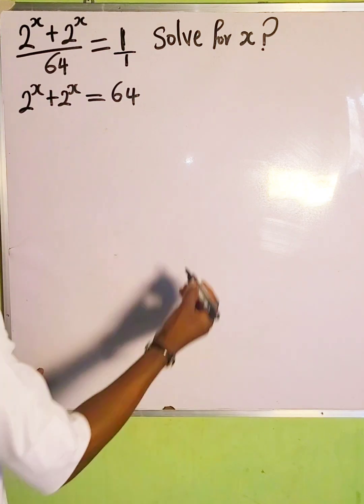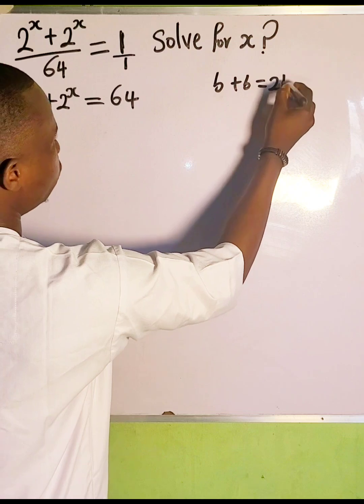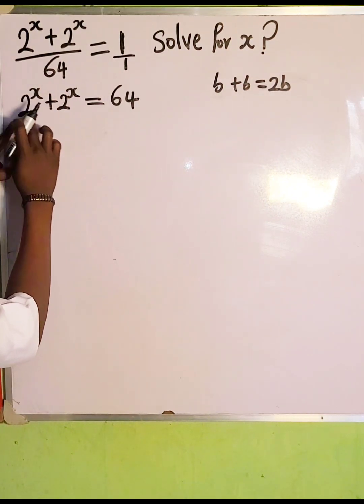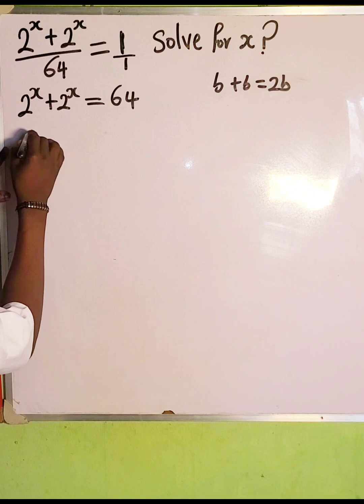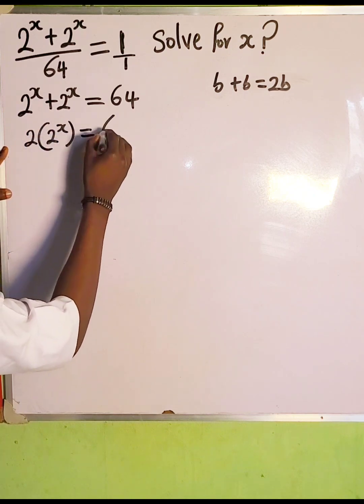The next thing we're going to do is recall when we have b plus b, this is the same as 2b because we are adding the same thing. So here, as you can see, we are adding the same thing also. So this is going to be 2 of 2 to the power of x, which is equal to 64.